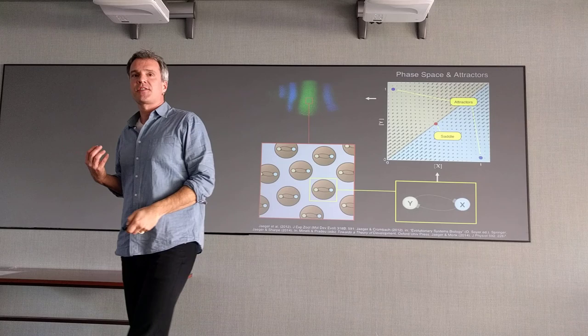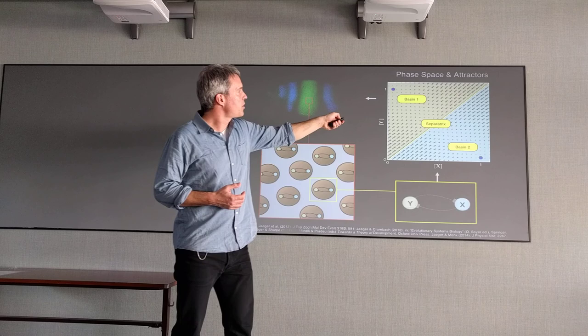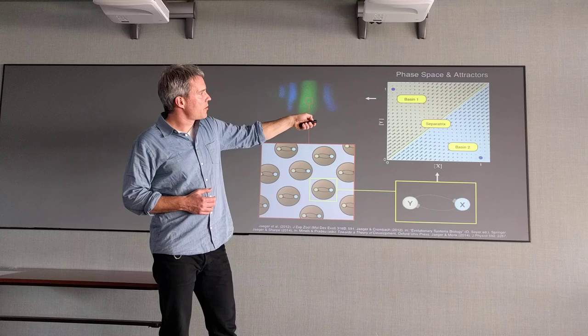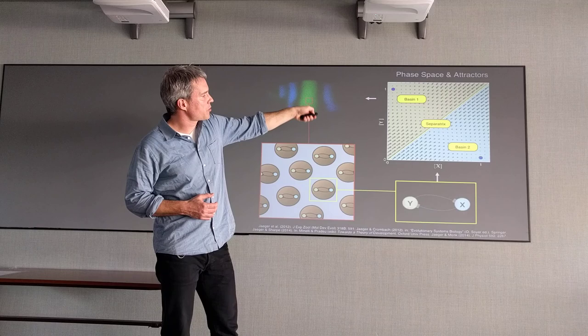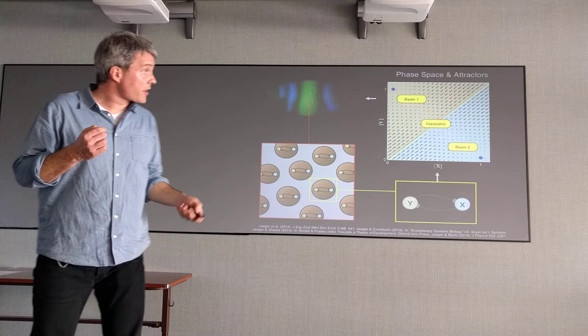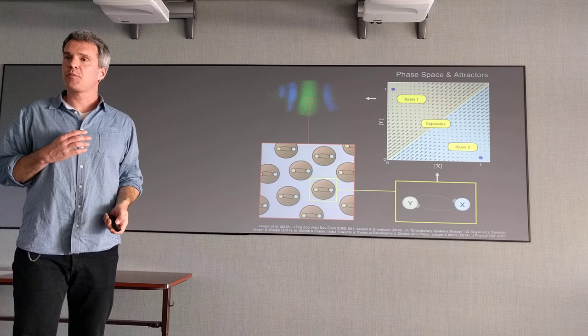Two more concepts. The blue and the green areas in this phase portrait are basins of attraction. These are all the points - if you start in one of these points, you end up with one attractor or the other. And they're separated by the separatrix. If you can actually measure this in a real system, you understand what it does completely. Does that make sense?